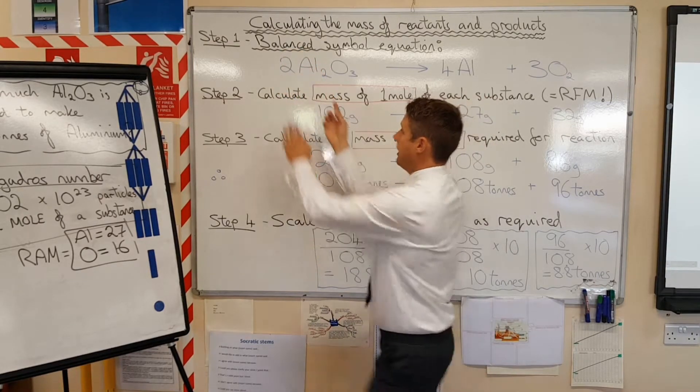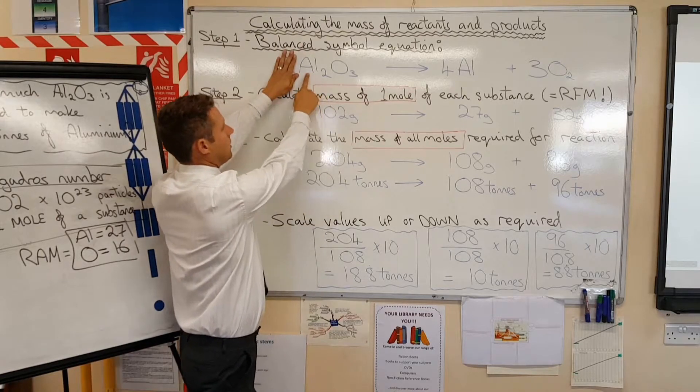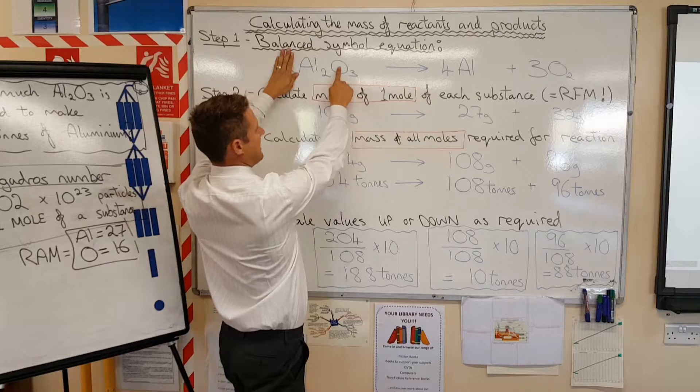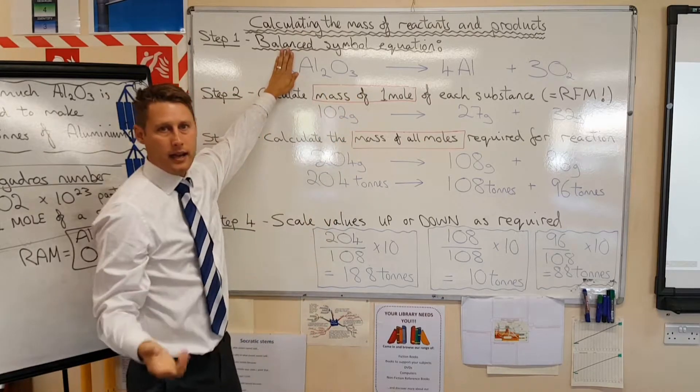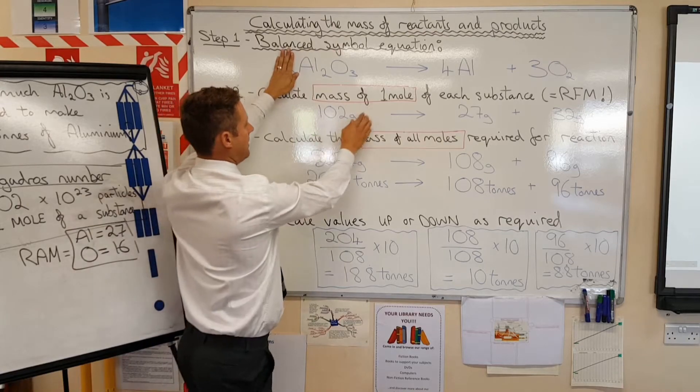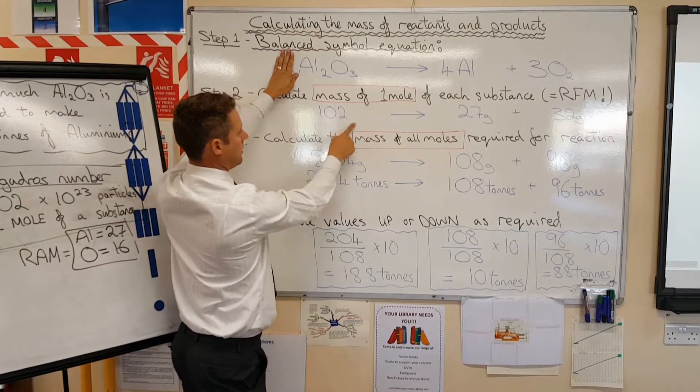So we have, let's go over this side, two lots of aluminum. That's two lots of 27. And then we've got three atoms of oxygen in here. And that's three lots of 16. Add all that together and you end up with 102.